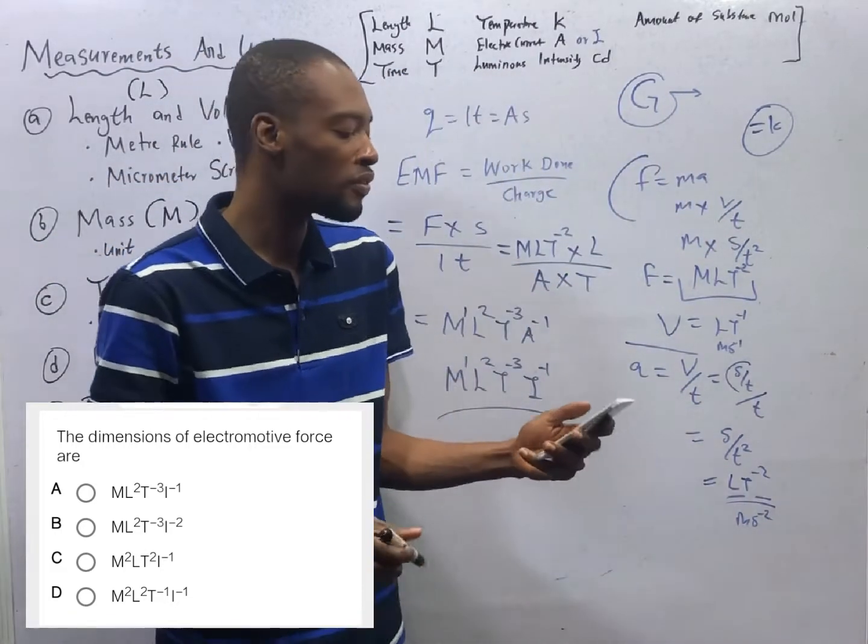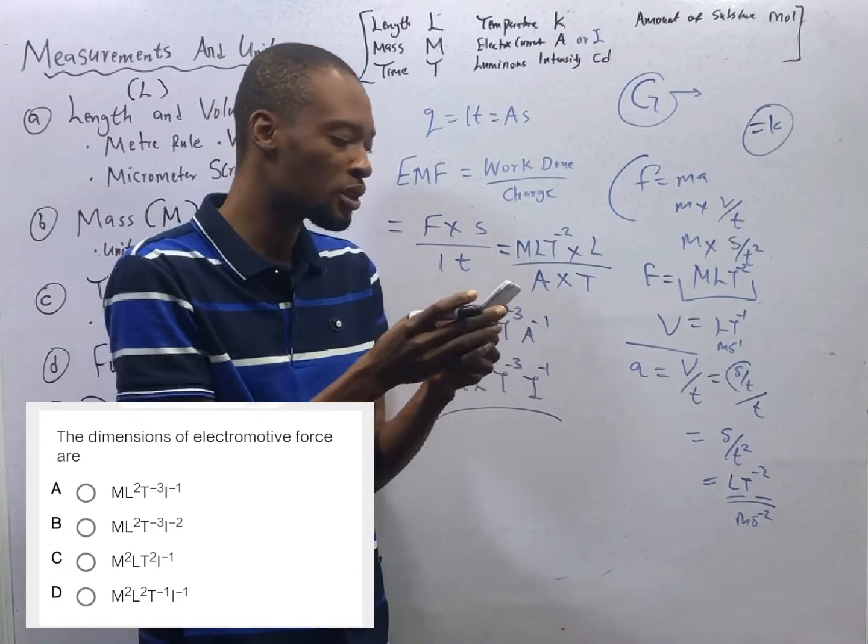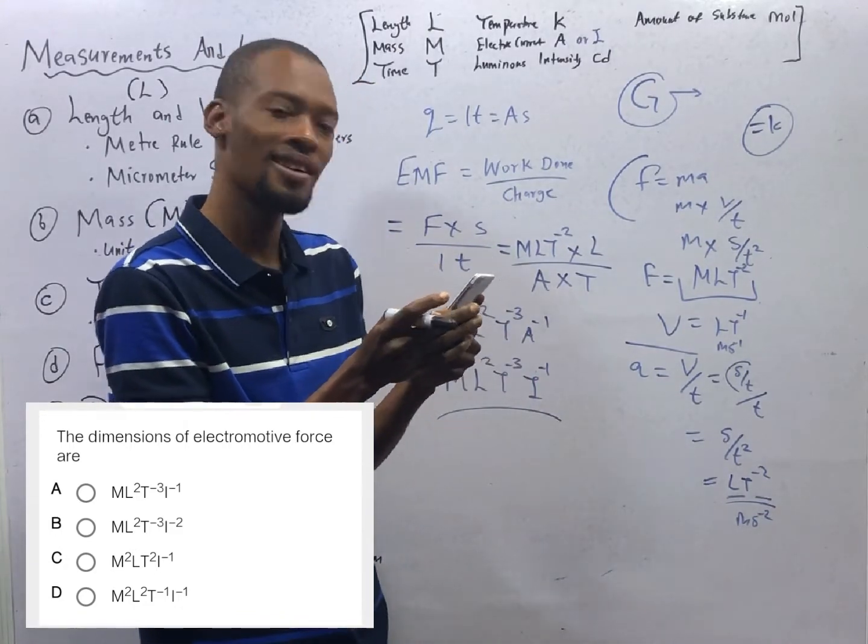This is the dimension for electromotive force. Once you know the definition of the quantity, you should be able to find the dimension. L is the correct option.